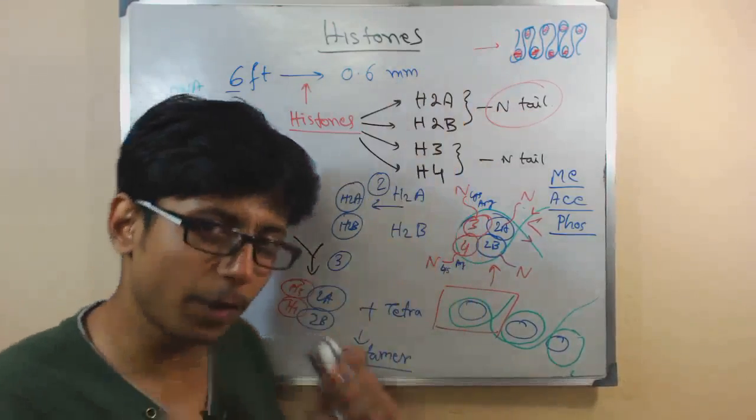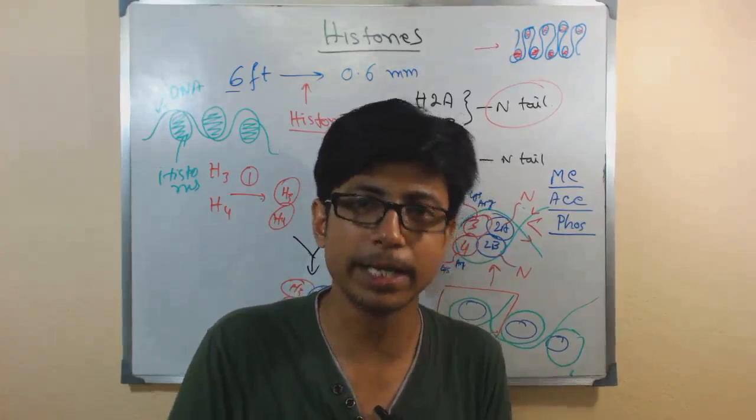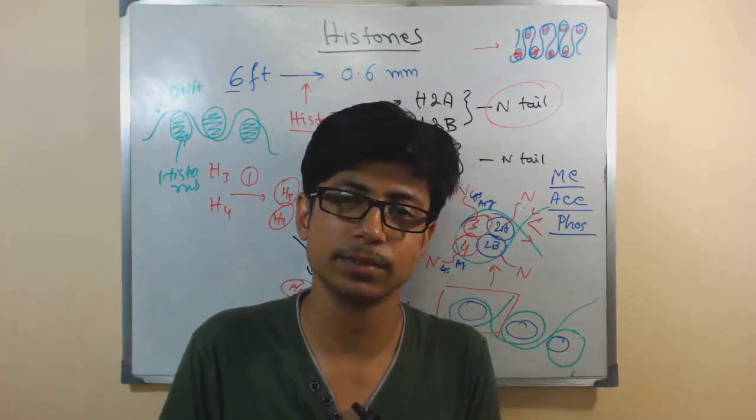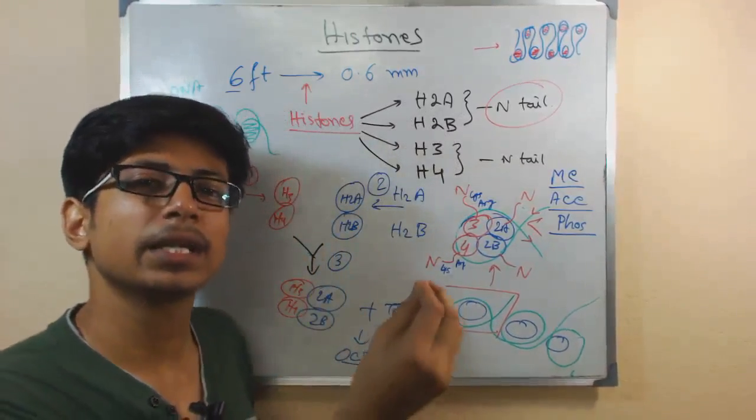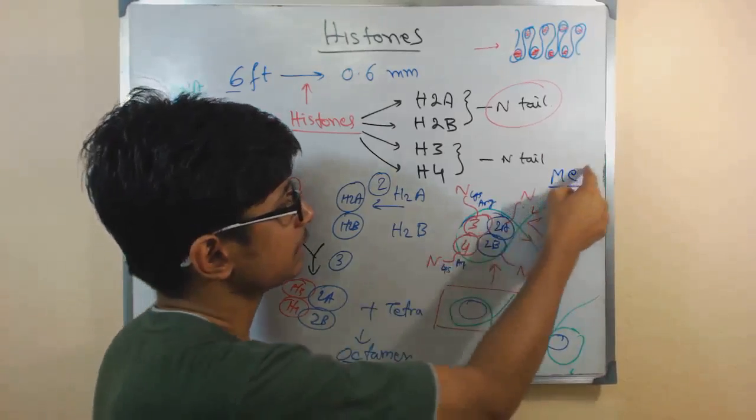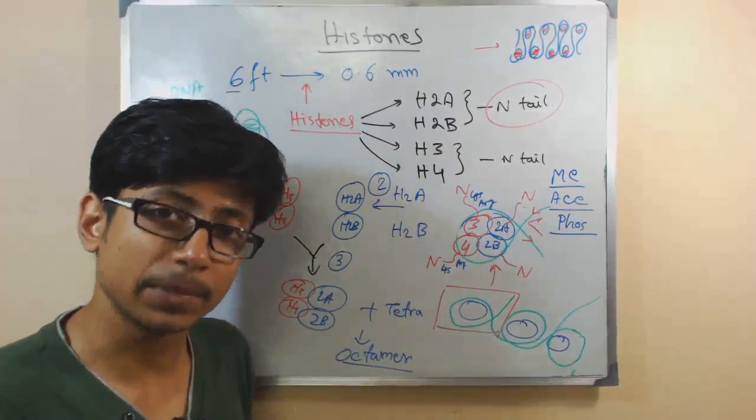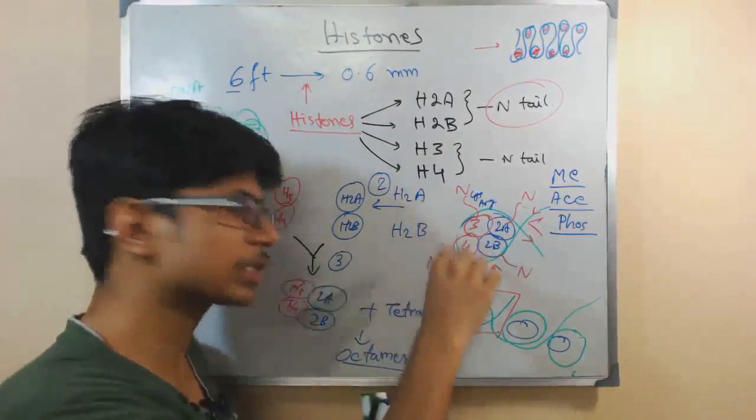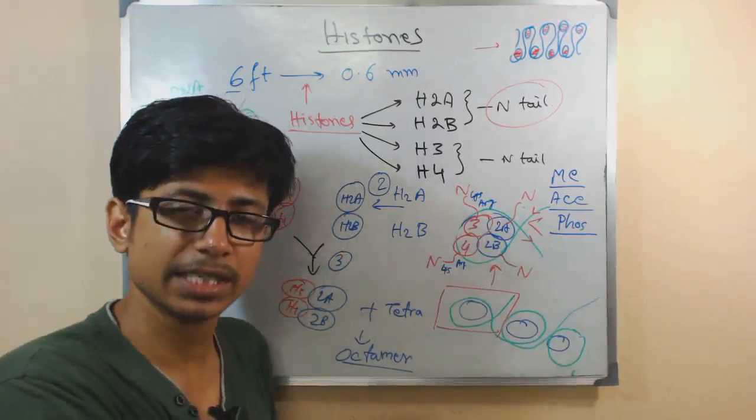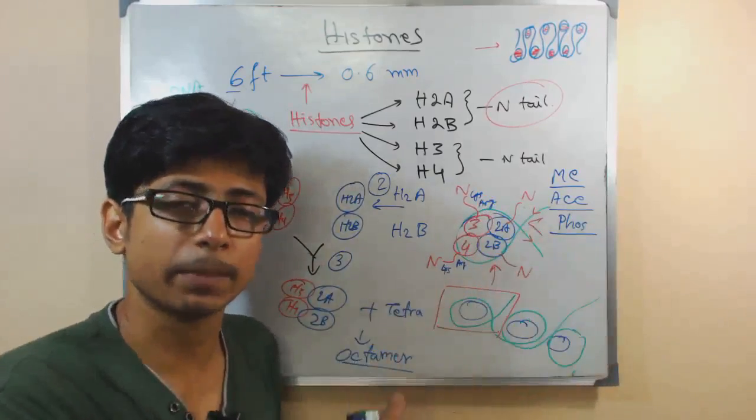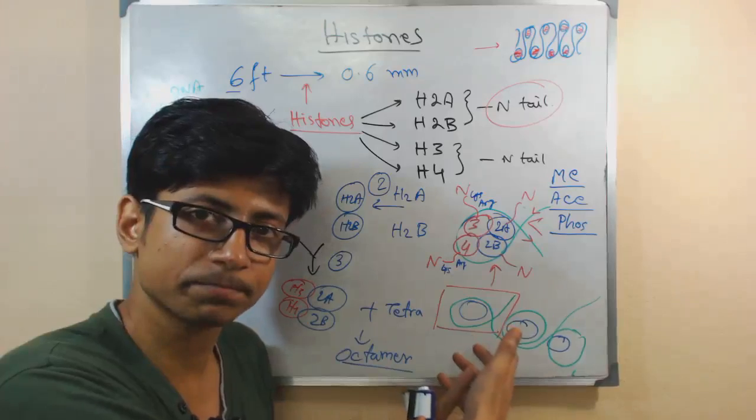Normally it is in compact form inside the cell. Now when a cell needs to produce an mRNA of a particular section which is already wrapped, it tags a particular chemical change. Like let's say acetylation of this H3 and H4 tail happens. After that, that section of the DNA is released from the histones. Histones just dissociate and then the rest of the process, transcription, will take place. After the transcription again, the histone will assemble and associate.